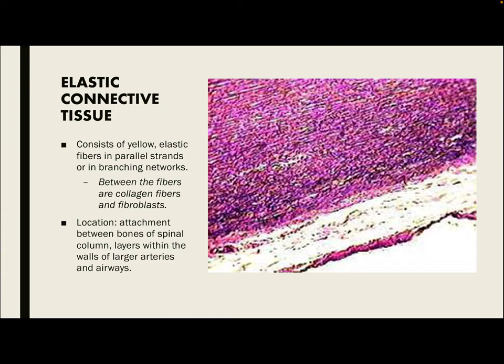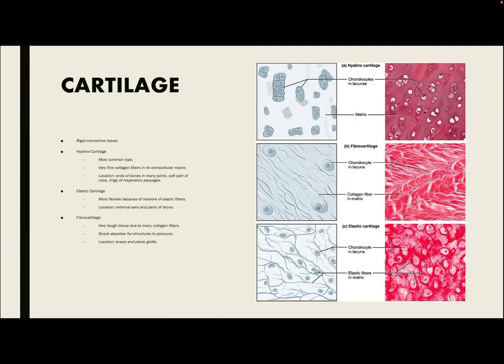Next, we have elastic connective tissue, which consists of yellow elastic fibers in parallel strands or in branching networks. They are located at attachments between the bones of the spinal column and in the layers within the walls of the larger heart arteries and airways.